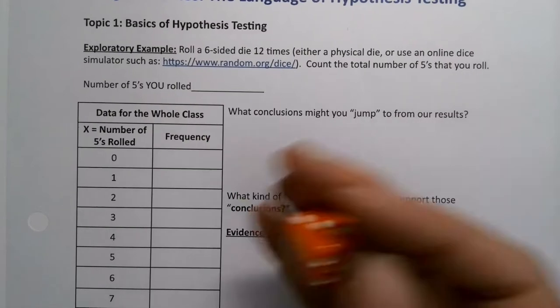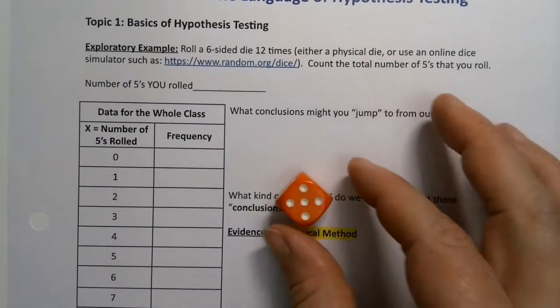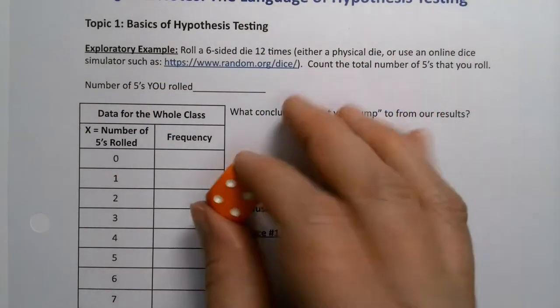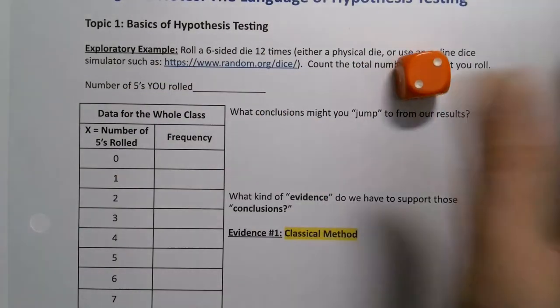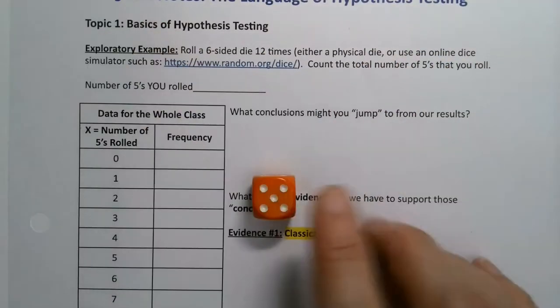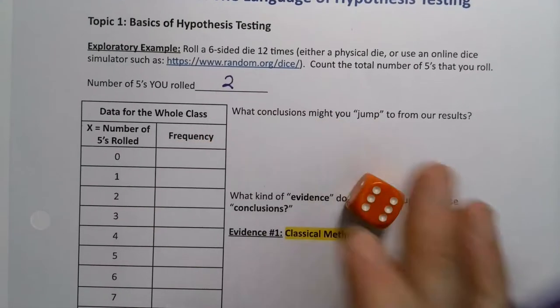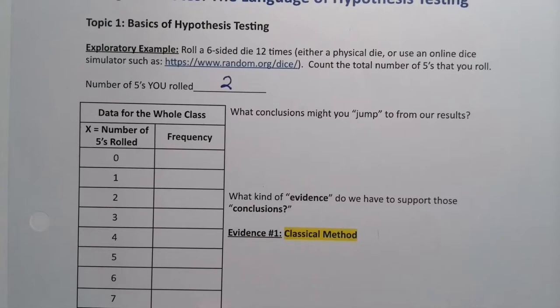So you would roll it 1, 2, 3, 4, 5, oops I got a 5, 6, 7, 8, 9, 10, 11, I got another one, there's 2, and 12. So I got 2. But you would roll whatever you get. Let me show you the online die simulator in case you're interested.